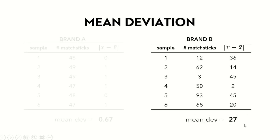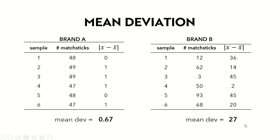The advantage of mean deviation is that it's simple, easy to understand, and not dependent on sample size. However, mean deviation is not commonly used in statistics, primarily because it does not describe a parameter in the population.